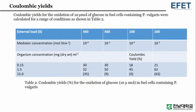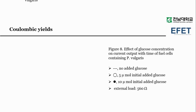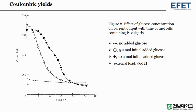Coulombic yields for the oxidation of 10 micromoles of glucose in fuel cells containing Proteus vulgaris were calculated for a range of conditions. Figure 8 shows the effect of glucose concentration on current output with time of fuel cells containing Proteus vulgaris: the dotted line represents no added glucose, blank circle denotes 5 micromole initial added glucose, and filled circle shows current output for 10 micromole initial added glucose. An external load of 560 ohm was applied.